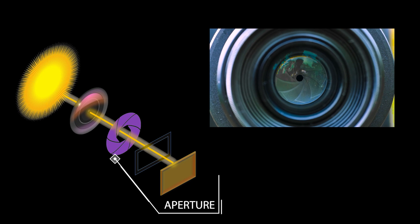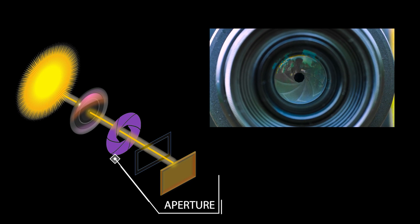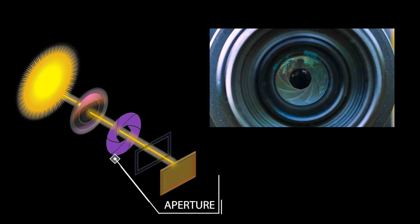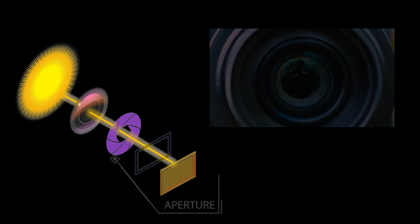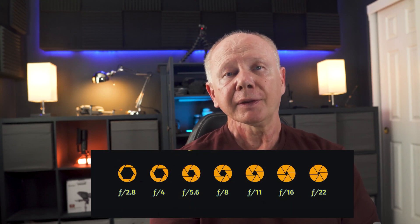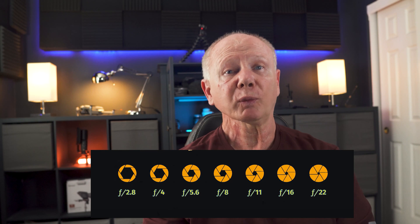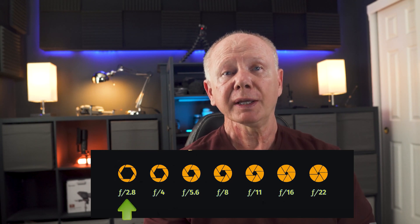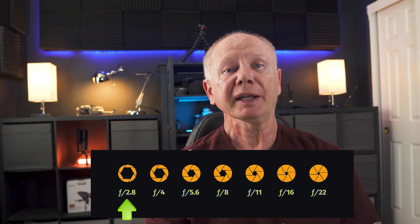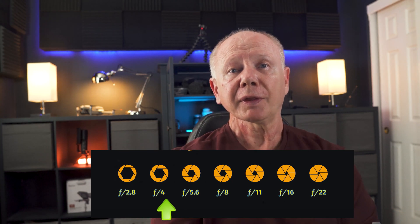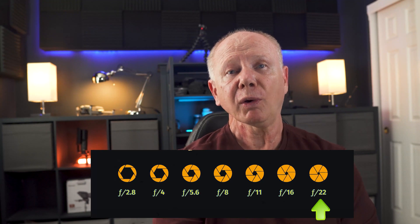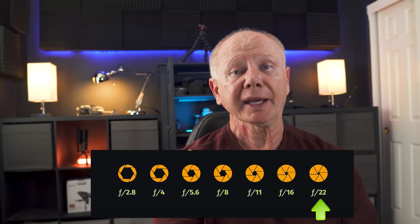The aperture refers to the opening that's not in the camera, but in the lens itself. It's a physical diaphragm through which light passes, and it's measured in f-stops. The smaller the f-stop number, like 1.4 for example, means the aperture is wider and fully open, letting in more light. The larger the f-stop number, like f22, means the hole is a lot smaller, letting in less light.